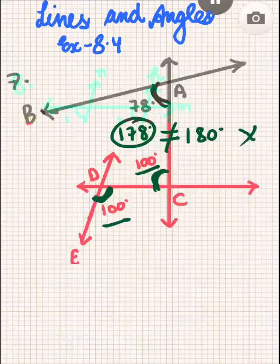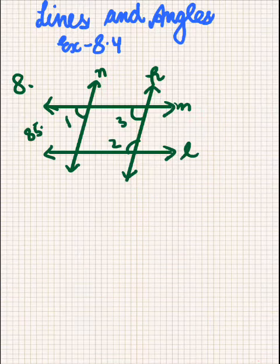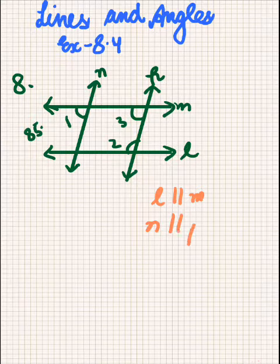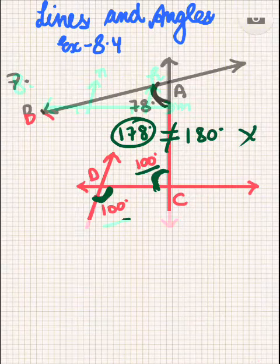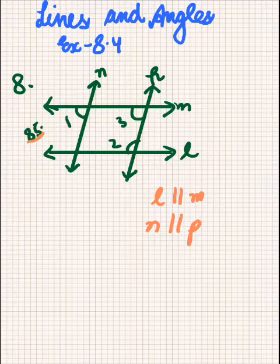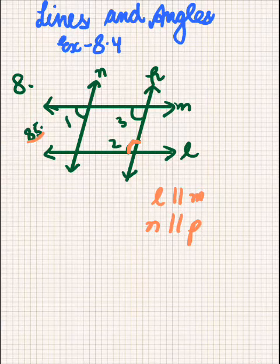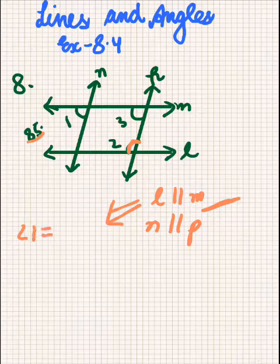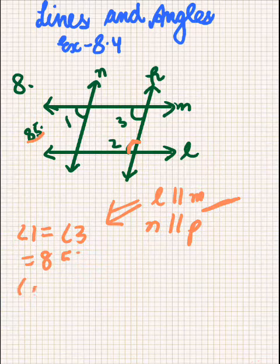In question number 8, we are given the figure and told that L is parallel to M and N is parallel to P. We are given that angle 1 is 85 degrees and we have to find angle 2. Since N is parallel to P and M is the transversal, angle 1 will be equal to angle 3, which equals 85 degrees, because of corresponding angles.